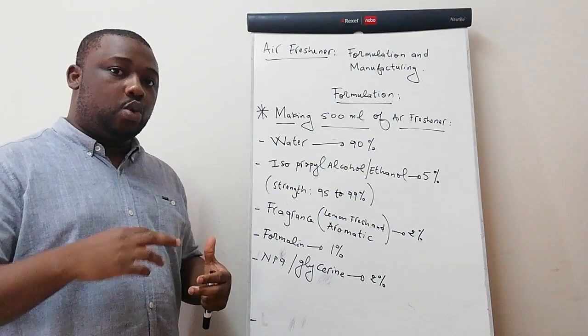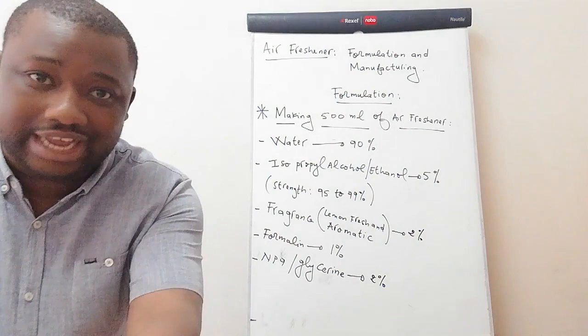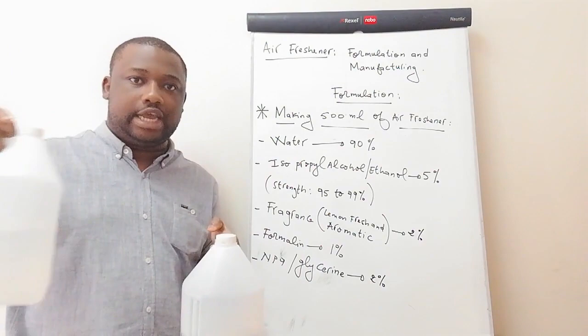For the next ingredient, we're going to use one of the two: NP9 or glycerin. I do have both of them here — this is my glycerin and this is my NP9. I'm going to make use of NP9.